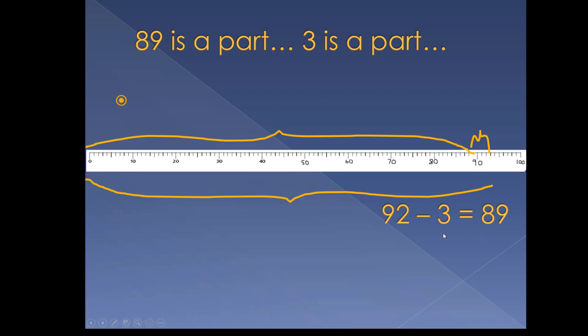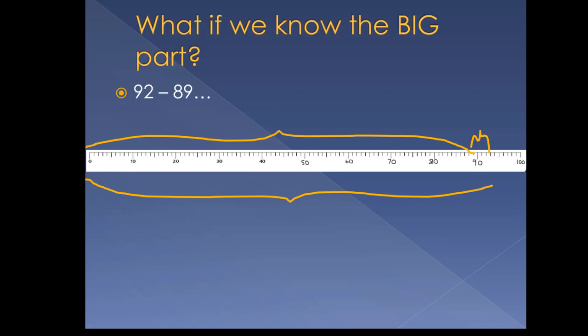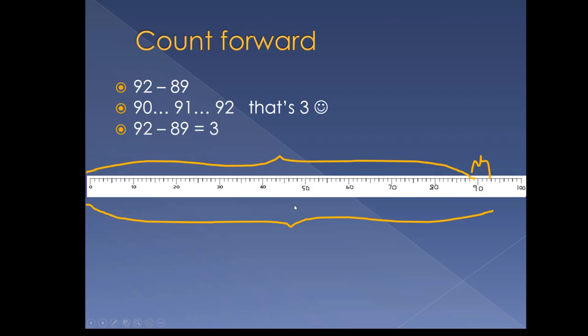Now let's look at that same relationship with a different twist. What if we know the big part? 92 minus 89. They seem pretty close, right? Counting back 89 does not sound like a good idea. But we can also count forward and find the part we still need. We still have to move with the first count. We say 90, 91, 92. Hey, that's three.